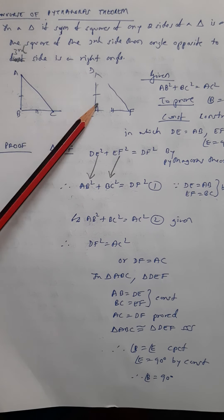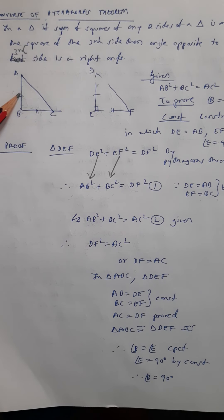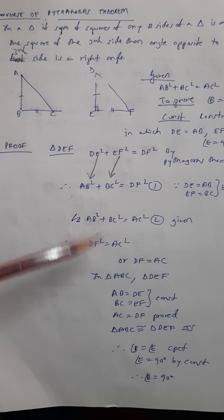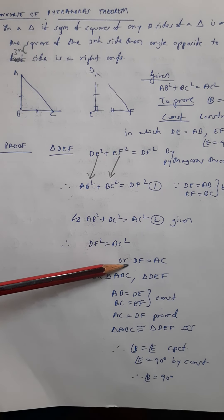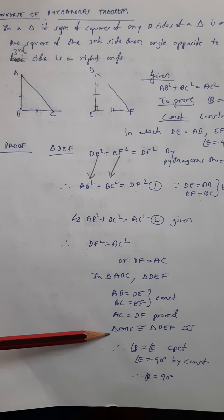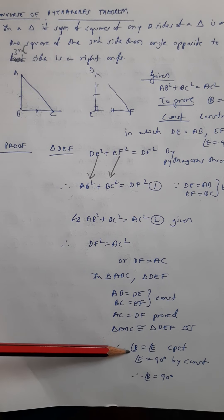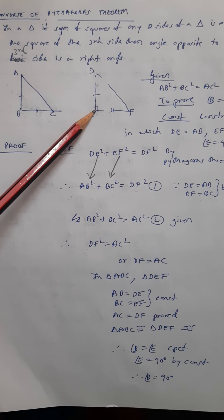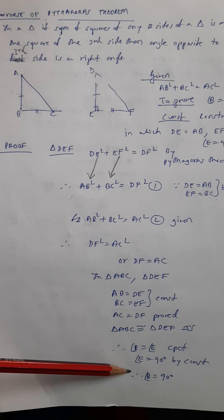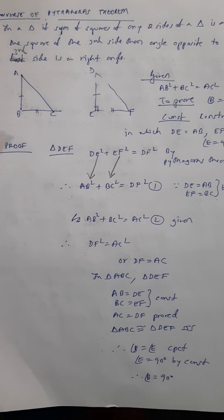Now we take the two triangles and prove them congruent. DE = AB by construction, EF = BC by construction, and we have proved DF = AC. So the triangles are congruent by SSS. Therefore angle B = angle E by CPCT. Since angle E = 90° by construction, angle B = 90°. Hence proved — this is the Converse of the Pythagoras Theorem.